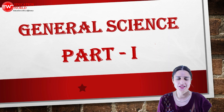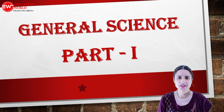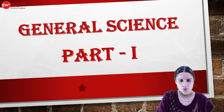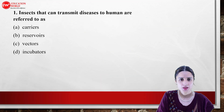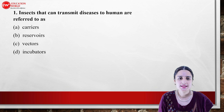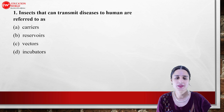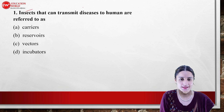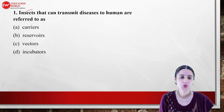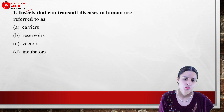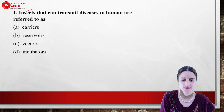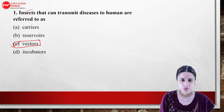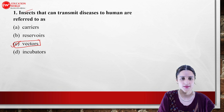Hey, welcome to our YouTube channel Education World. Today we will do Journal Science 20 most important questions, part number 1. First question: insects that can transmit disease to humans are referred to as what? The correct answer is vectors. Insects that can transmit disease are called vectors.